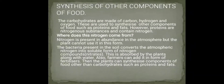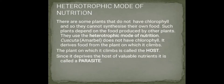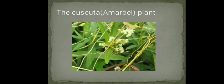In heterotrophic nutrition, some plants do not have chlorophyll and cannot synthesize their own food, so they depend on food prepared by other plants. Cuscuta, or Amarbel, has no chlorophyll and derives its food from the host plant on which it climbs. Cuscuta is a parasite because it deprives the host of valuable nutrients.